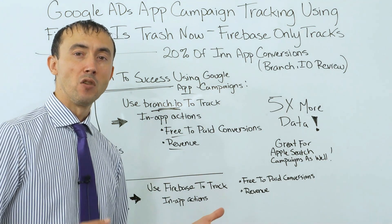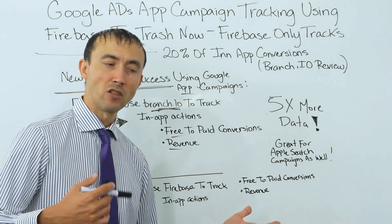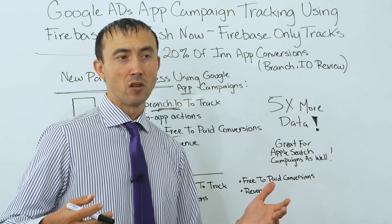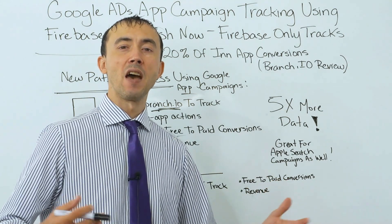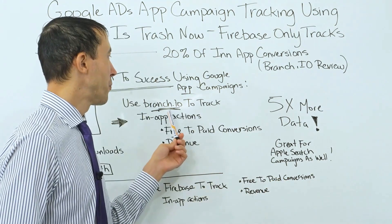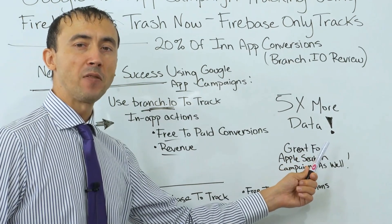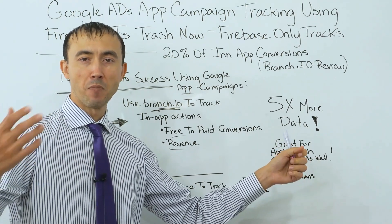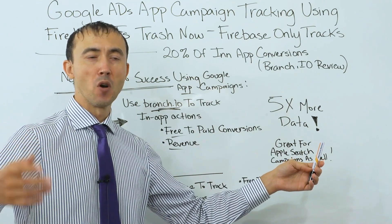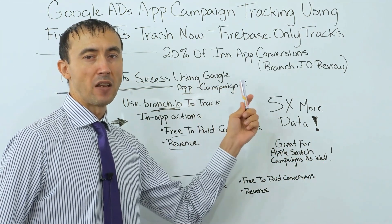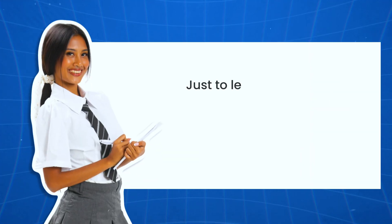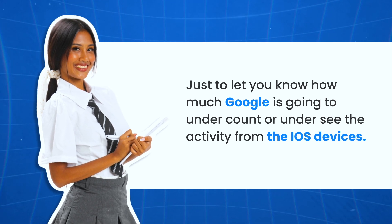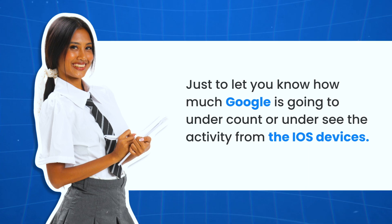Right now, using Firebase alone — at least unless you're going after Android users only — it's not going to be profitable unless you're really selling something with high demand and super low competition. With branch.io, you're actually going to get about five times as much in-app data for whatever you're tracking — purchases, multiple opens of the app — compared to using Firebase for iOS devices. That's how much Google undercounts or undersees the activity from iOS devices.